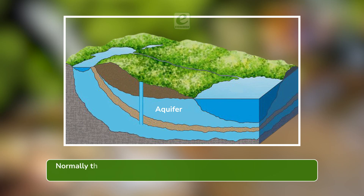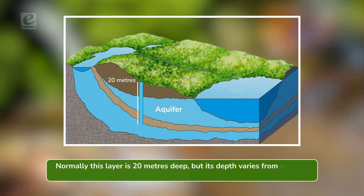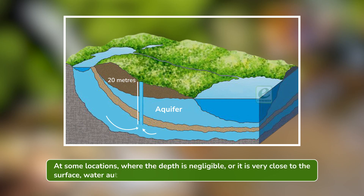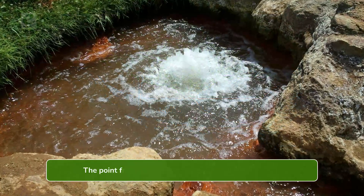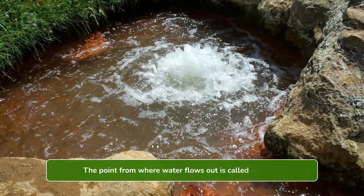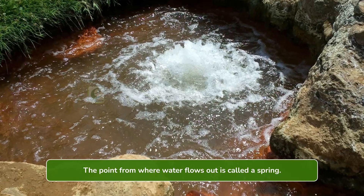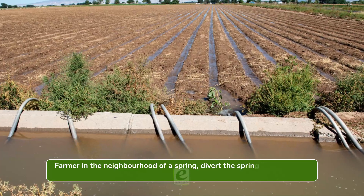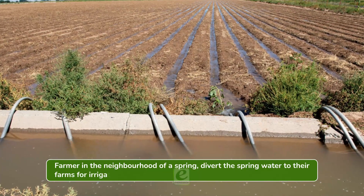Normally this layer is 20 meters deep, but its depth varies from place to place. At some locations where the depth is negligible or it is very close to the surface, water automatically flows out. The point from where water flows out is called a spring. Farmers in the neighborhood of a spring divert the spring water to their farms for irrigation.